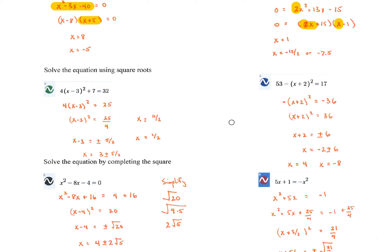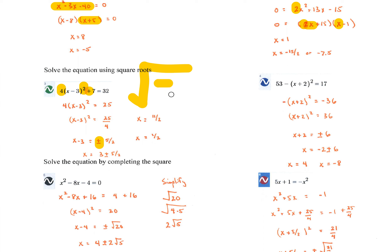Solve the equation using square roots. First, we want to isolate the squared term — same way we isolated when solving absolute value equations. This is just reverse order of operations. The first thing is to get rid of the 7 by subtraction, then divide by 4, and then take square roots. When we take square roots, we introduce the plus or minus. The square root of 25 fourths — you can take the square root of the top and the square root of the bottom separately.